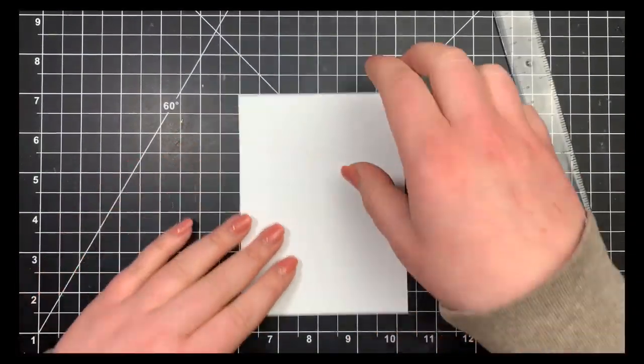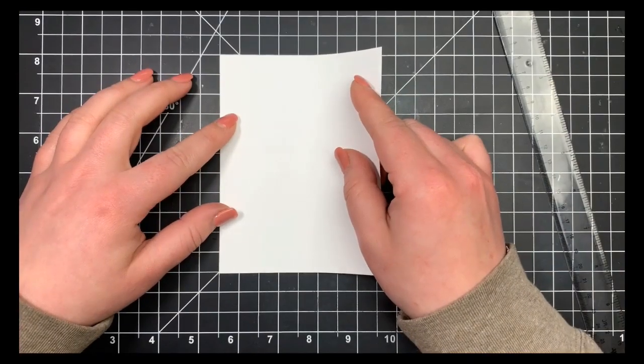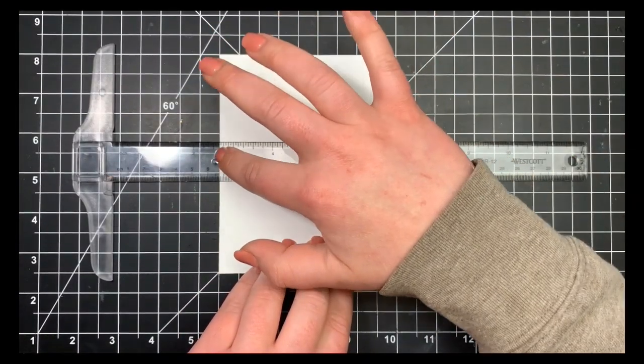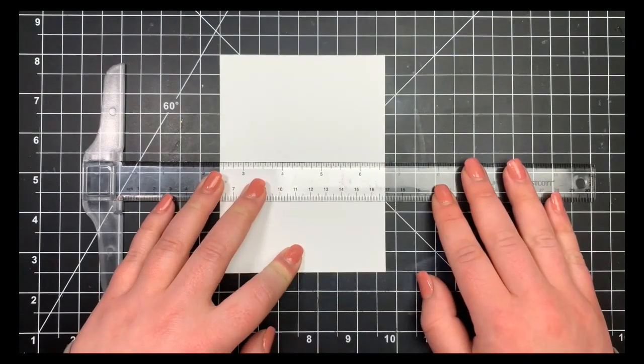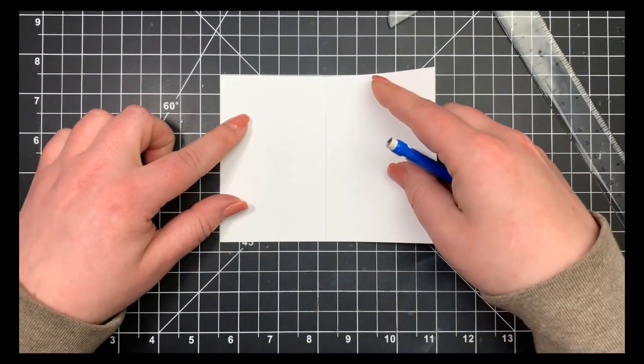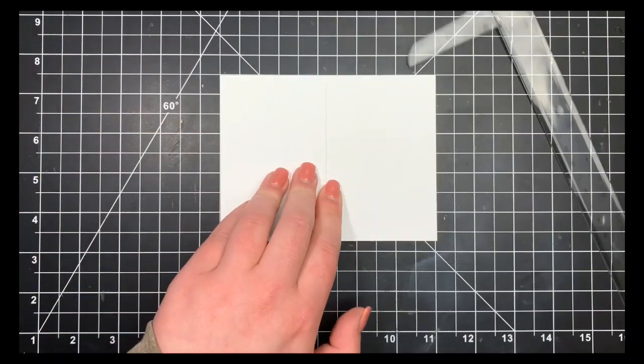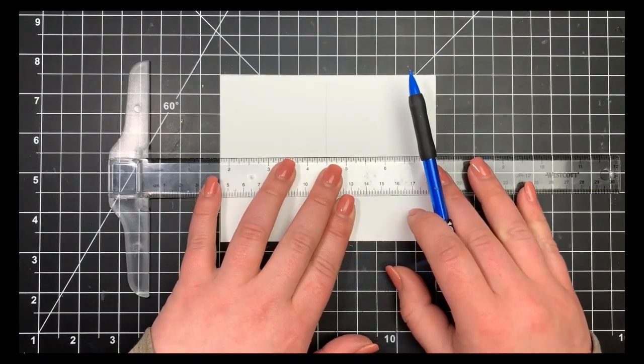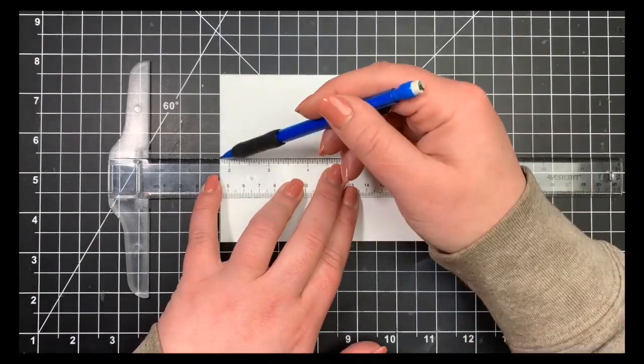I'm taking my piece of cardstock, Nina Solar White, cut down to 5.5 by 4.25 inches. I'm using the grid mat and my ruler here to draw straight lines vertically and horizontally so I can mark the center of my card panel.